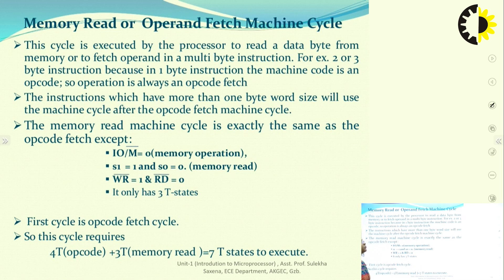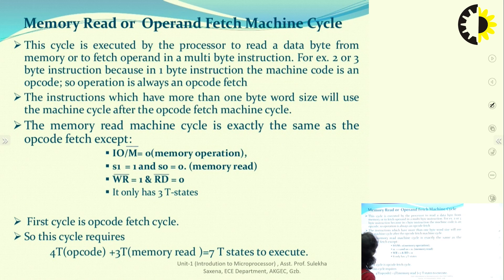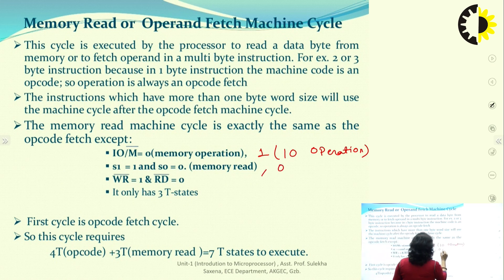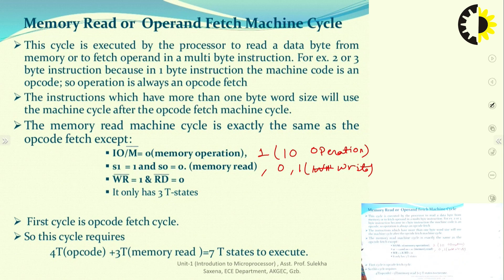During memory read, memory write, IO read, and IO write, there is no extra decoding step — only data is available on the bus. So read and write cycles require only 3 T states. For memory operations, IO/M̄ is 0; for IO operations, IO/M̄ is 1. S1 and S0 are 1 and 0 for read, and 0 and 1 for write. R̄D̄ is 0 for read and W̄R̄ is 0 for write. For an opcode fetch plus memory read, the total is 4 + 3 = 7 T states.